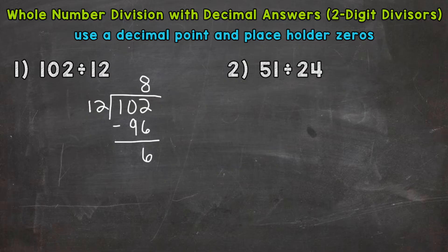8 remainder 6 is the answer to this problem, but we want this in decimal form. So what we're going to do is use a decimal point. Let's place it after the 102, after the whole number. Once we have it placed there, we need to bring it straight up into our answer. We're going to use a placeholder zero after that decimal.